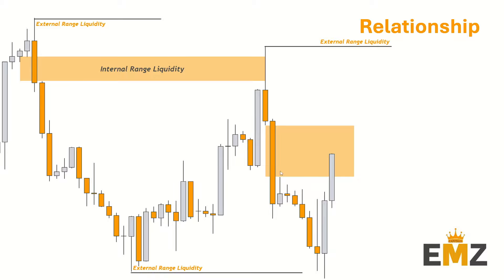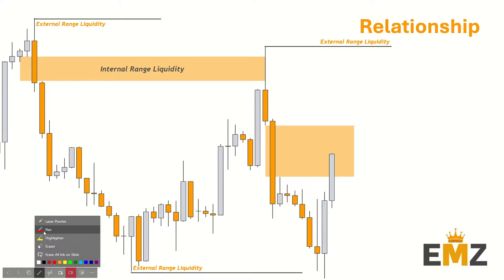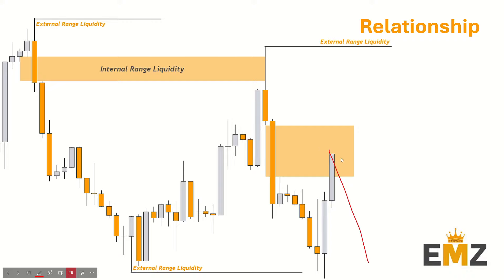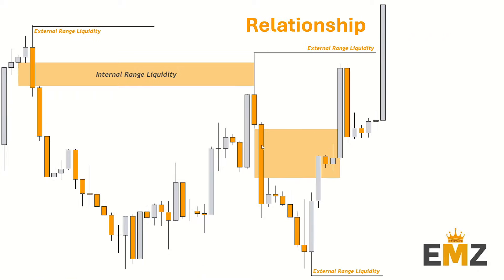As traders, we would wish for market to come and respect this fair value gap and drop off. However, if we see price action not respecting this fair value gap — if we see market pushing higher — we should assume our external range liquidity, our sell side liquidity, will be taken. With market playing around in our fair value gap, we get these indecision candles left, and market forms this order block, further reinforcing our move to the upside.